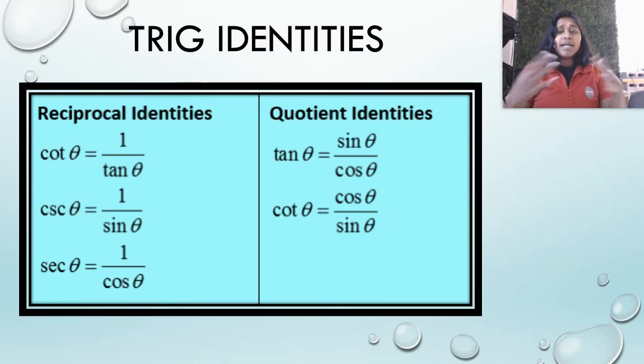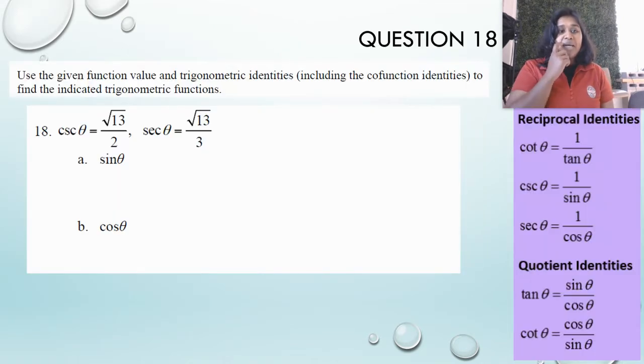So, some identities are going to pop up. Just a reminder, these are reciprocal and quotient identities. Take a snippet if you want, or Google them for yourself. So let's jump on in.